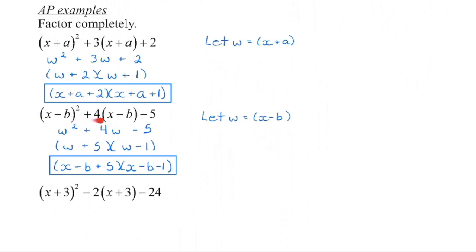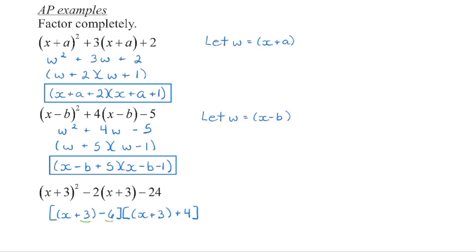Now, if you were to actually go back here and simplify — FOIL this out, distribute the 4 in, combine like terms, and then factor — you will end up with the same thing. It's just going to be much more time consuming. So now that we have the hang of this, we don't necessarily need the substitution step anymore. We can see we have the same thing in brackets, and because this is a 1, we're going to look for two numbers that multiply to negative 24 and add to negative 2. So we're going to have negative 6 and positive 4. Check for like terms: we can combine 3 minus 6 in the first bracket, and 3 plus 4 in the second bracket. And we have now factored that original trinomial.